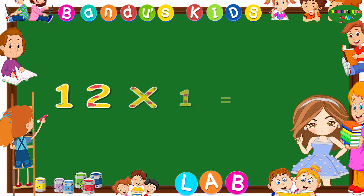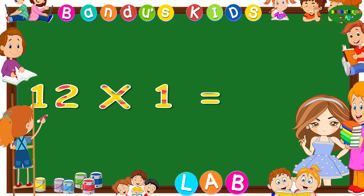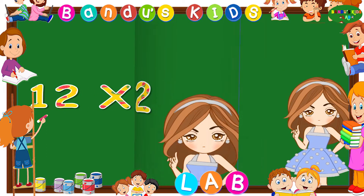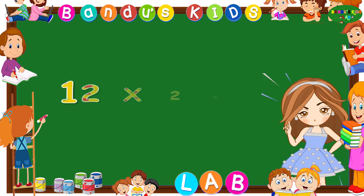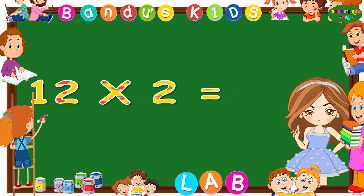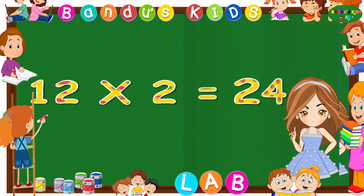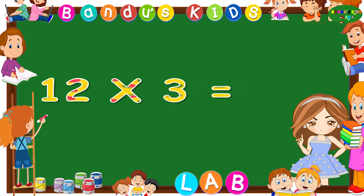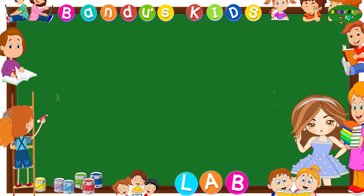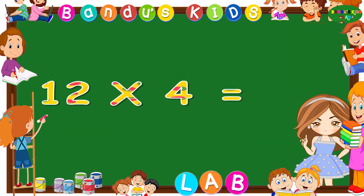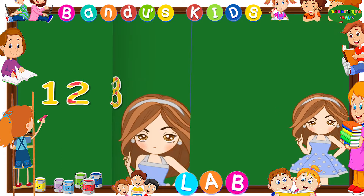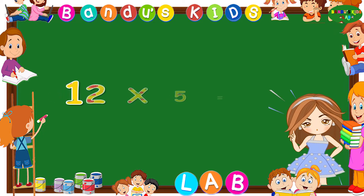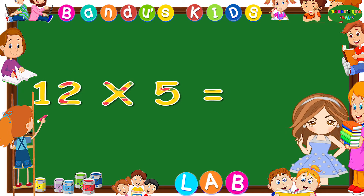12 ones are 12. 12 twos are 24. 12 threes are 36. 12 fours are 48. 12 fives are 60.